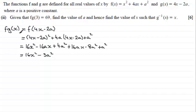Okay, so I've got fg of x now in terms of x, and we're given that fg of 3 equals 69, so we should be able to find a from this.